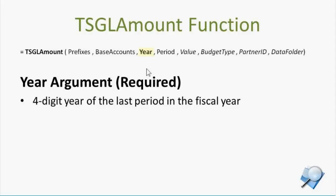Of course, version 9.3 hasn't been up that long, so you wouldn't have data quite back that far yet. But the point being that you can specify years from many years back in the fiscal year that you're trying to report for. It does all the necessary math and operations to look in either the account table or the GL account activity table and roll back whatever periods you need to get back to that point.